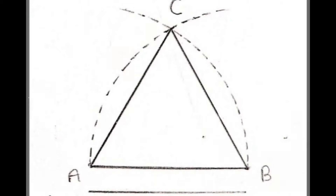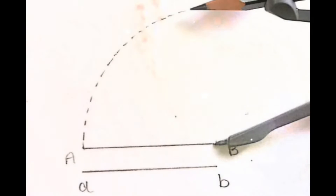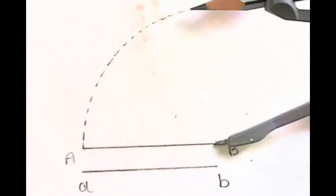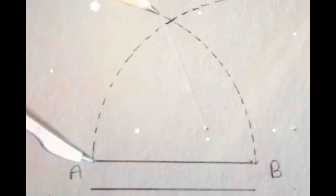According to the small line AB, draw another line and label it capital A and B. Now open the compass according to the length of AB, and put the tip of the compass on point A and start to draw an arc. The radius should be according to AB.